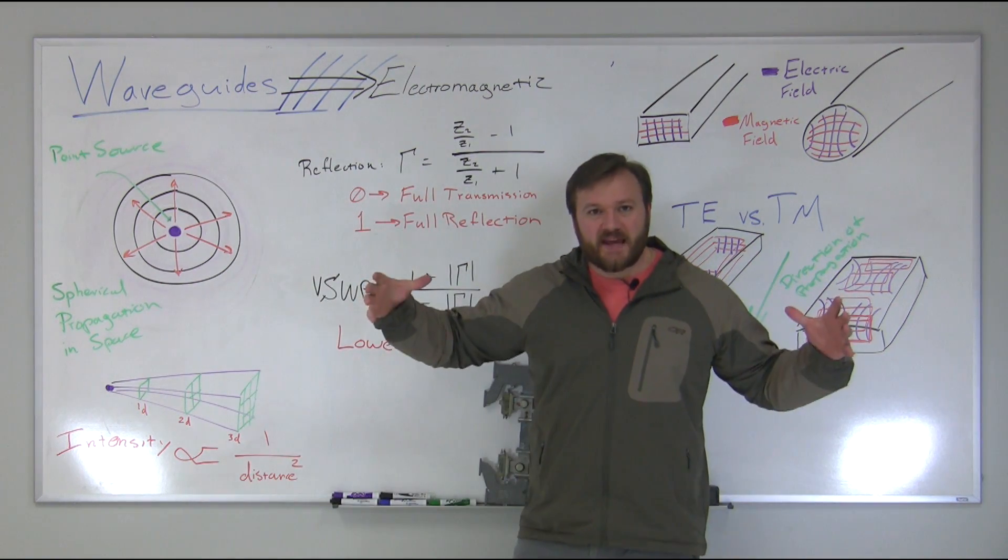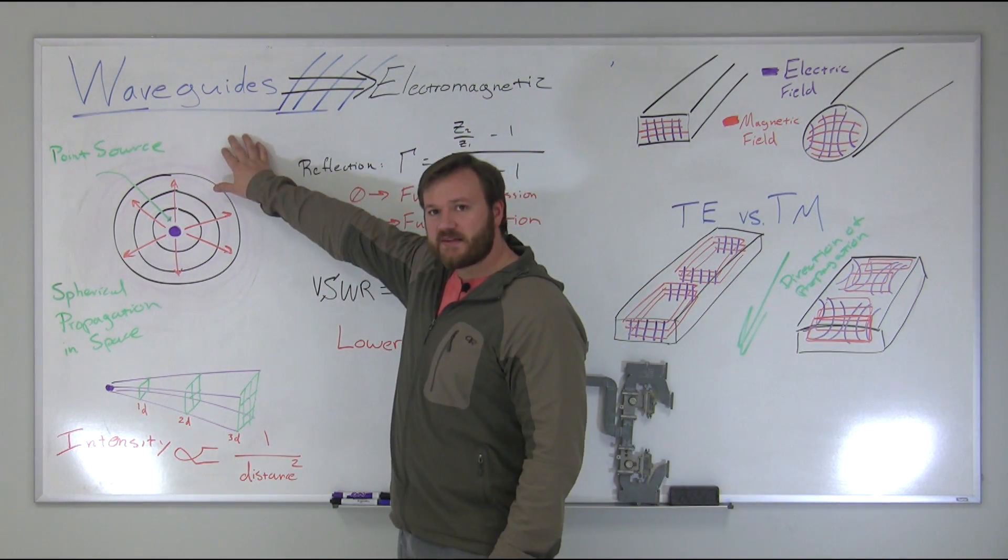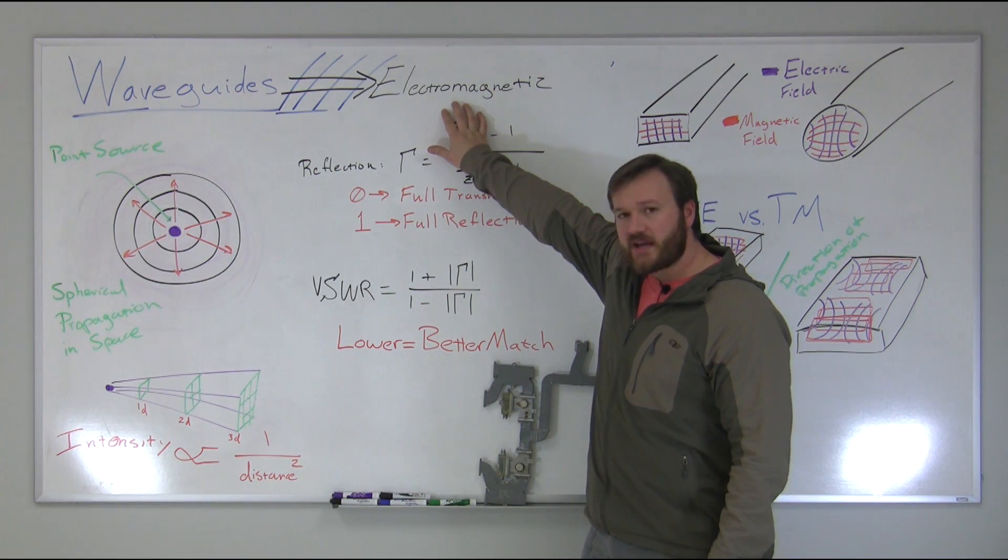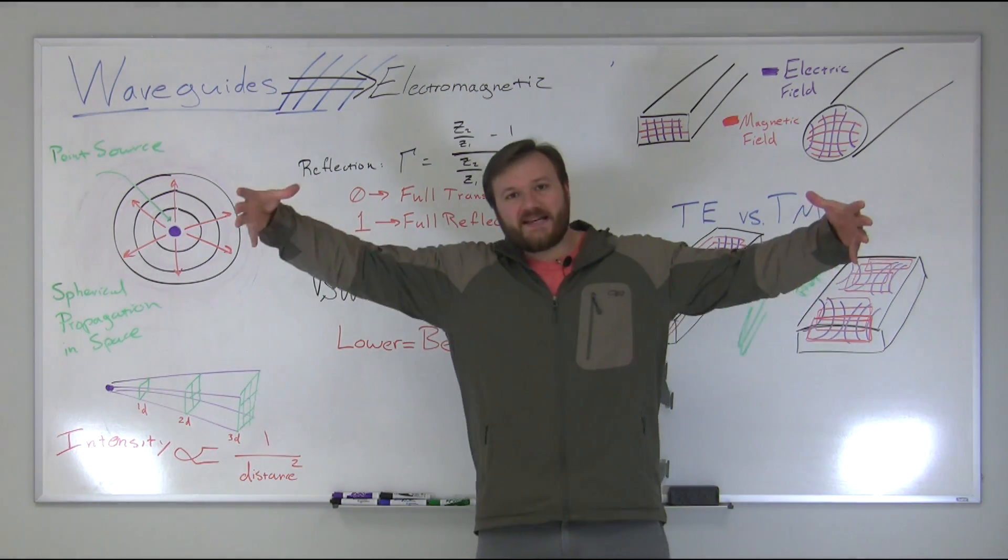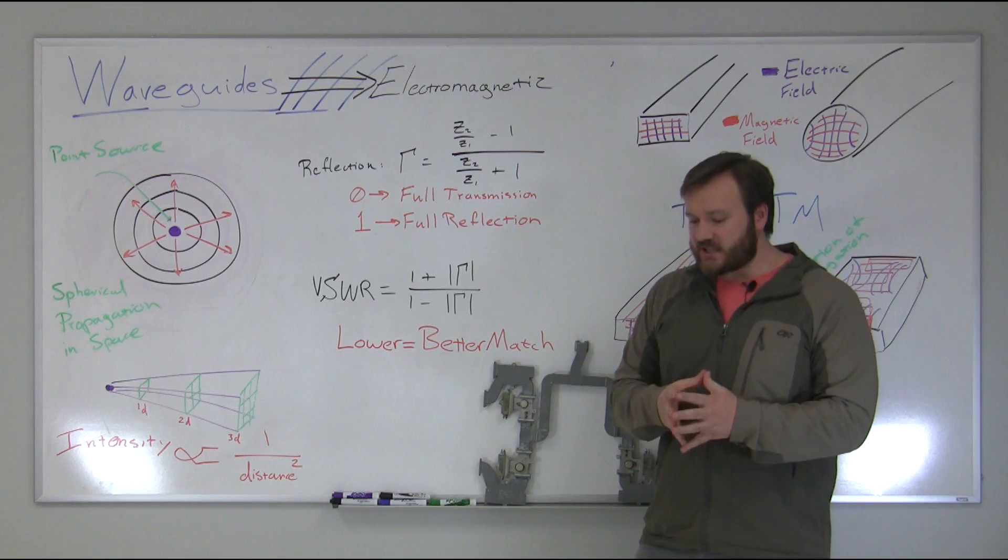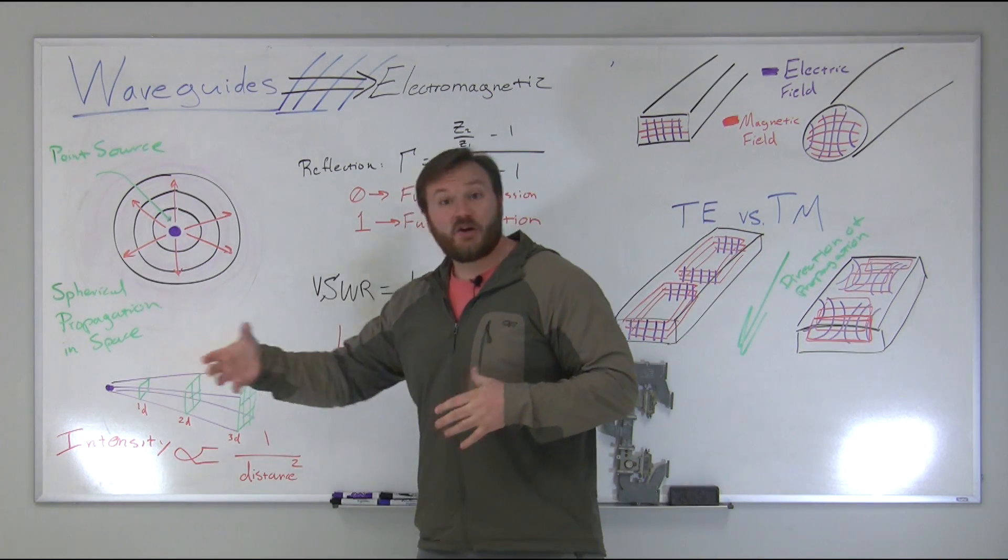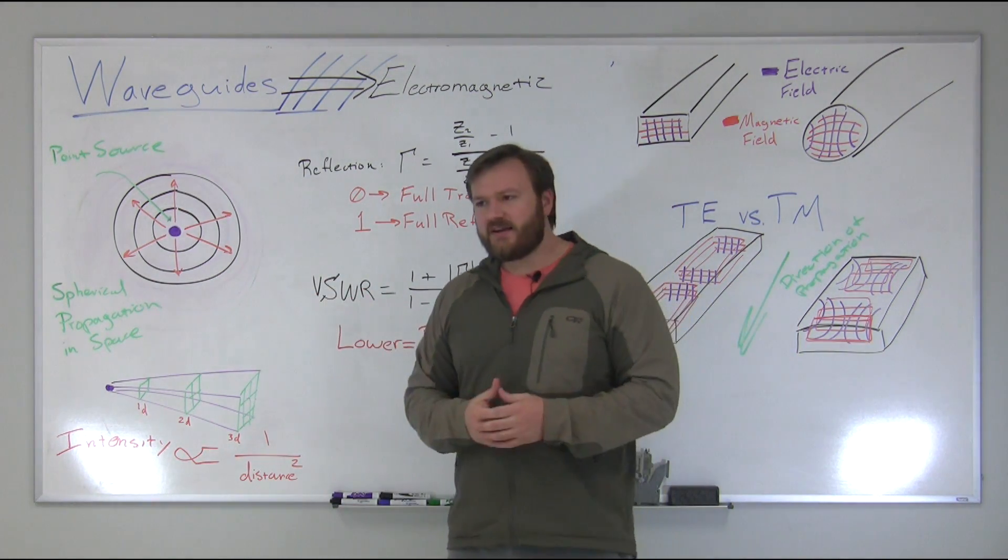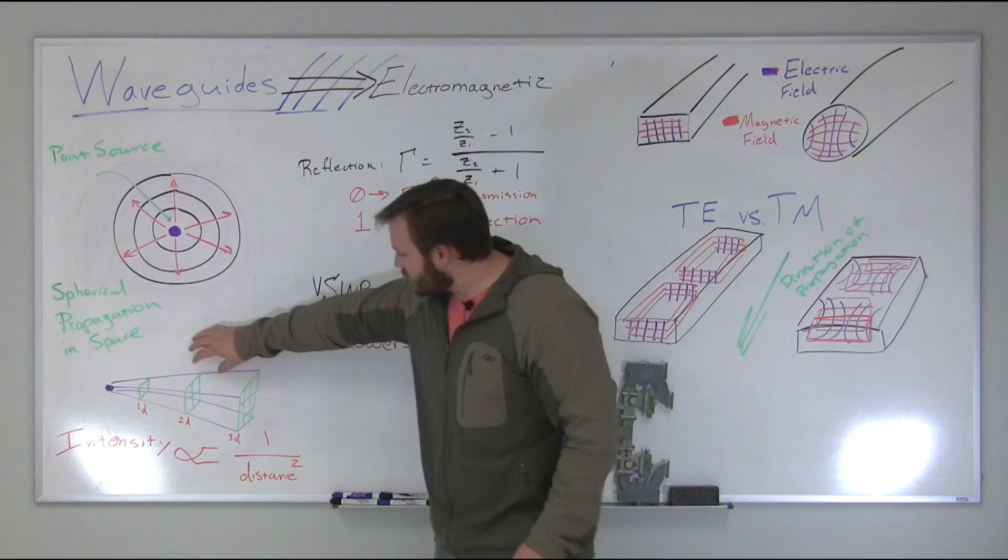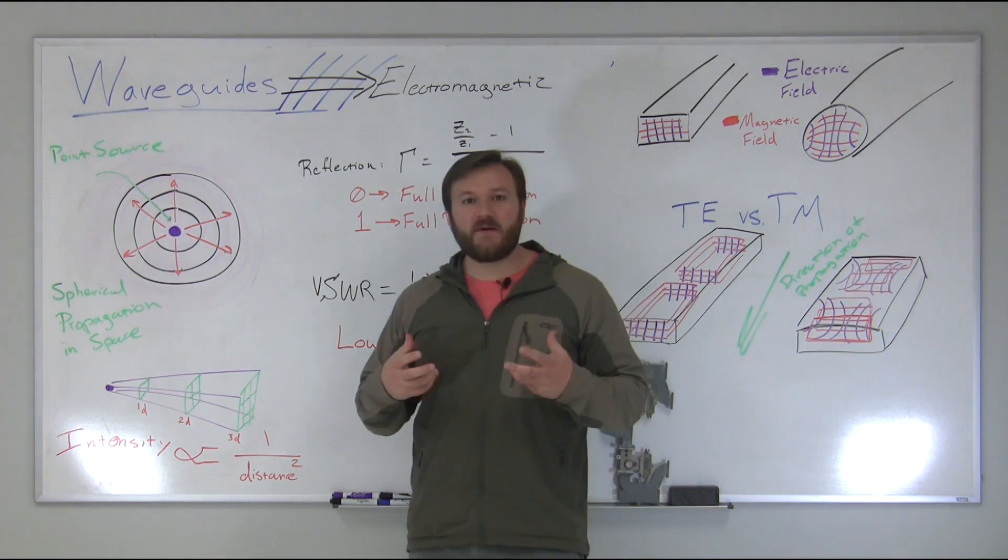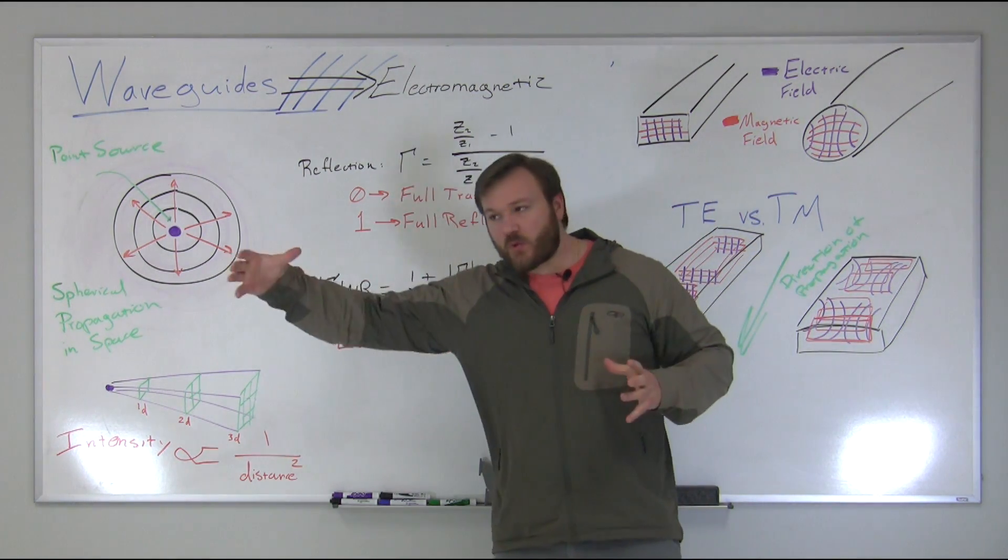Now, whenever you have a point source in space and you're emitting electromagnetic radiation, and this being the distinctive here is we're talking about waveguides in the context of electromagnetic propagation of waves. If you have a point source and you have an emission from that and it propagates out into space, you're going to have a spherical wave. It's going to be moving out spherically for consistent space. Now, as that propagates through space, you're going to have losses as the energy gets more and more spread out.